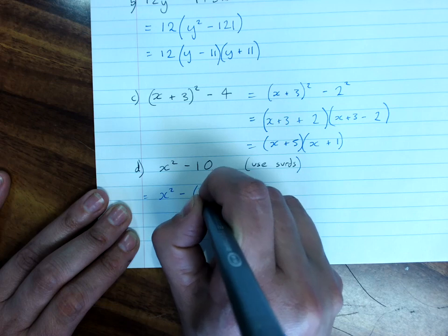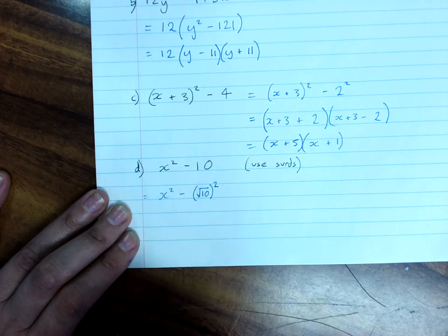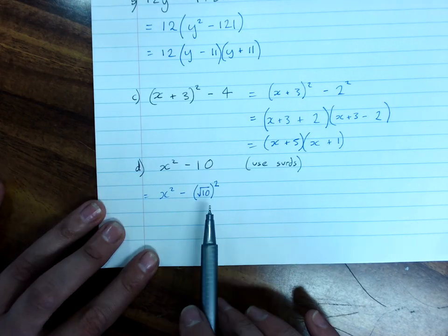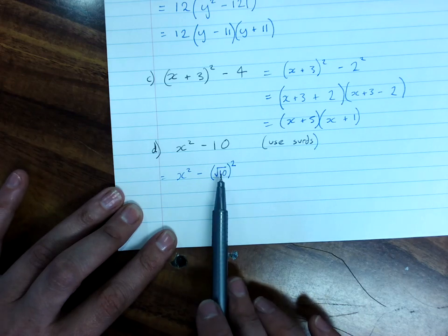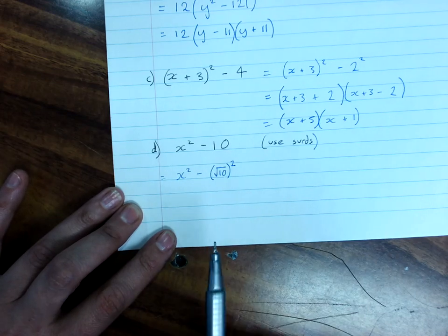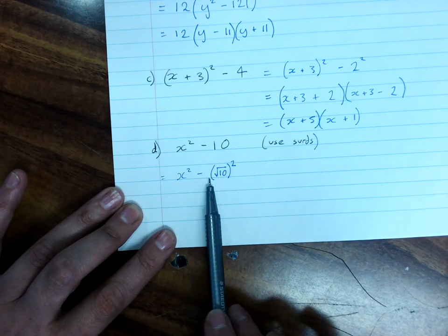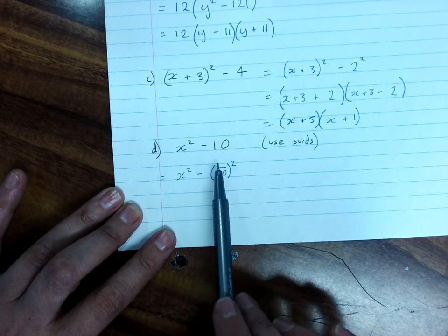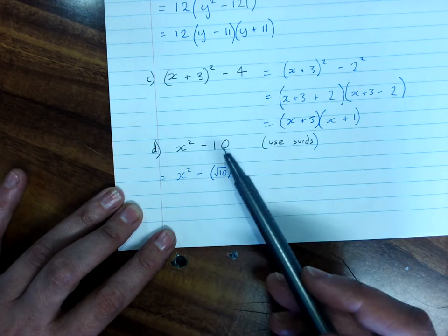the square root of 10 squared, that would be perfectly correct. The square root of 10 squared is 10. So, the square root of 10 is the square root of 10, obviously.